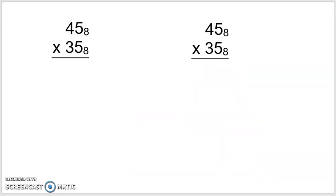Let's go to a couple of multiplication problems and do these in base 8. We're going to do this using the intermediate algorithm on the left and the standard algorithm on the right. With the intermediate algorithm, remember you sort of keep track of all the things you're multiplying. So 5 times 5 in base 8 — that's going to be 3 eights with 1 left over, written as 31 in base 8.